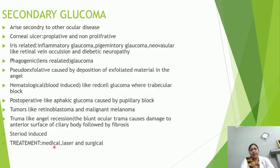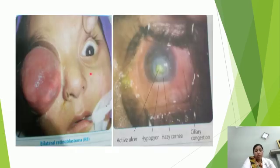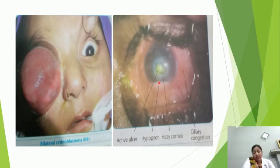In secondary glaucoma, we use medical, laser, and surgical treatment, similar to primary glaucoma. Examples include retinoblastoma — cancer of the eye — with increased intraocular pressure and hazy cornea.